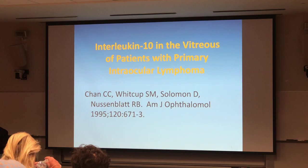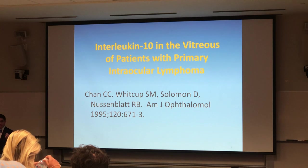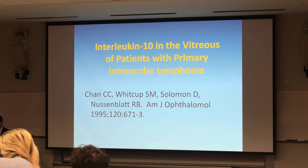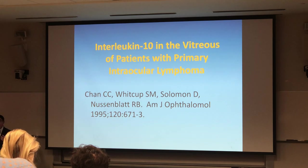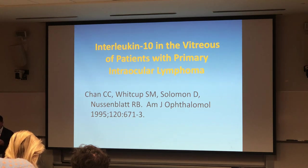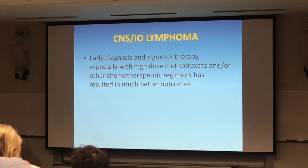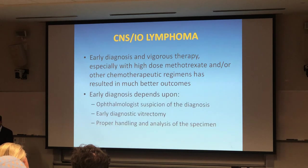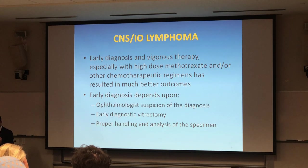This is the famous work of Chi Chao Chen. Scott Woodcock, who used to be at the National Eye Institute, also contributed significantly. Robert Nussenblatt was one of the leaders in this field — Bob unfortunately passed away about five years ago unexpectedly. For CNS intraocular lymphoma, early diagnosis and aggressive therapy are key. High-dose methotrexate results in much better outcomes. The diagnosis depends on us as ophthalmologists being suspicious and proceeding with early diagnostic vitrectomy — when in doubt, do it.